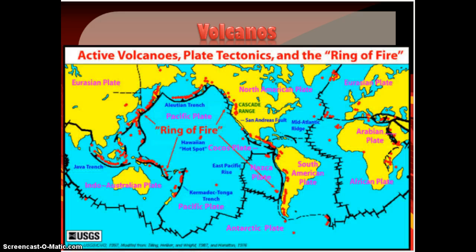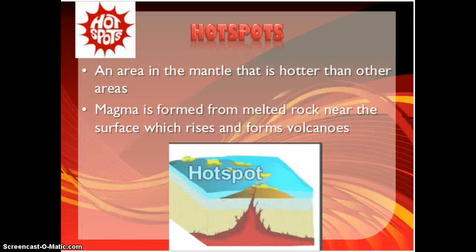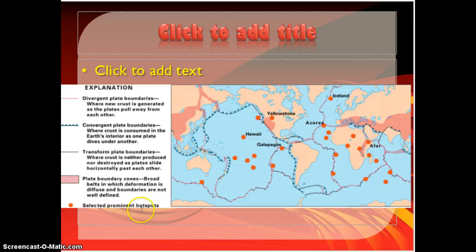Then you have some volcanoes that aren't associated with plate boundaries at all — those form because of hot spots. There's some disagreement on what causes a hot spot exactly, but basically you have areas in the mantle that are hotter than other areas, and for whatever reason the magma starts to come up from below and breaks through the crust, forming these hot spot volcanoes, which tend to be a little different than other types. Here's a picture showing just the major hot spots in the world that you should be aware of.